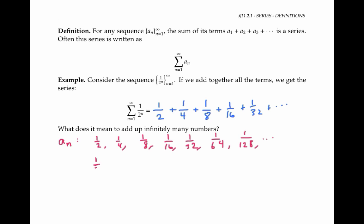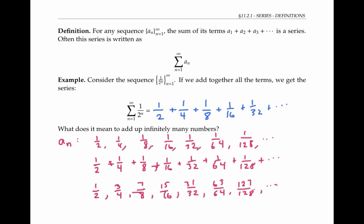If I just add the first term, that's just one half. Now I'll add the next term on; that gives me a sum of three fourths. If I add one eighth to that, my sum goes up to seven eighths. Then adding the next one, I get fifteen sixteenths, and so on, just adding one more term each time. This process of repeated addition gives me a new sequence called the sequence of partial sums.